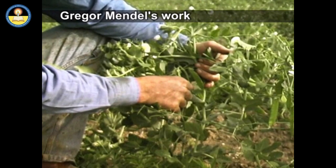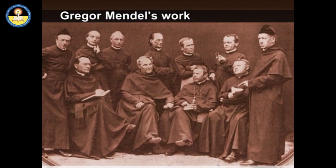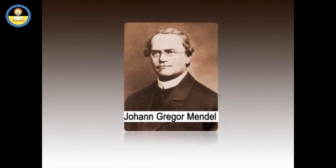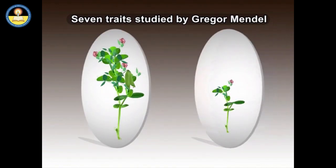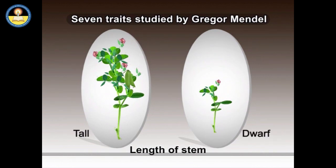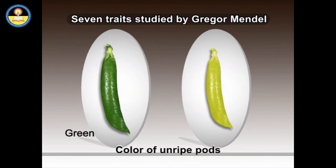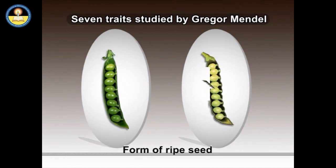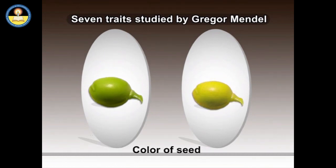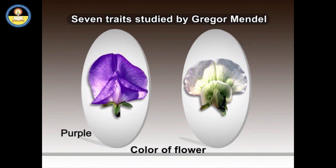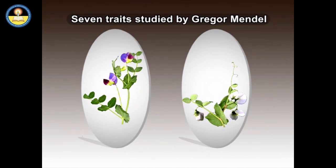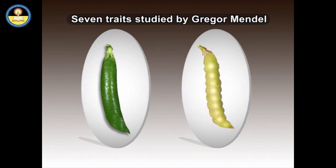Mendel's work and his laws of inheritance were not appreciated in his lifetime; it was quite late, in 1900, that the results of his experiments were understood. Gregor Mendel studied 7 traits in his pea plant experiments: length of stem (tall or dwarf), color of unripe pods (green or yellow), shape of ripe pods (inflated or constricted), shape of ripe seed (smooth or wrinkled), color of seed (yellow or green), color of flower (purple or white), and position of flowers (axial or terminal). He used several versions of these pea plants to discover the laws of heredity.